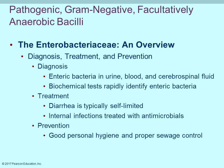Diagnosis is done by collecting samples — from urine, blood, or cerebrospinal fluid — and using biochemical tests to rapidly identify the organism and start treatment. Internal infections are treated with antibiotics; which antibiotic depends on the genus. Many of these cause diarrhea, which is usually self-limiting. Prevention involves good personal hygiene and proper sewage control — clean water and proper sewage treatment break the transmission cycle.